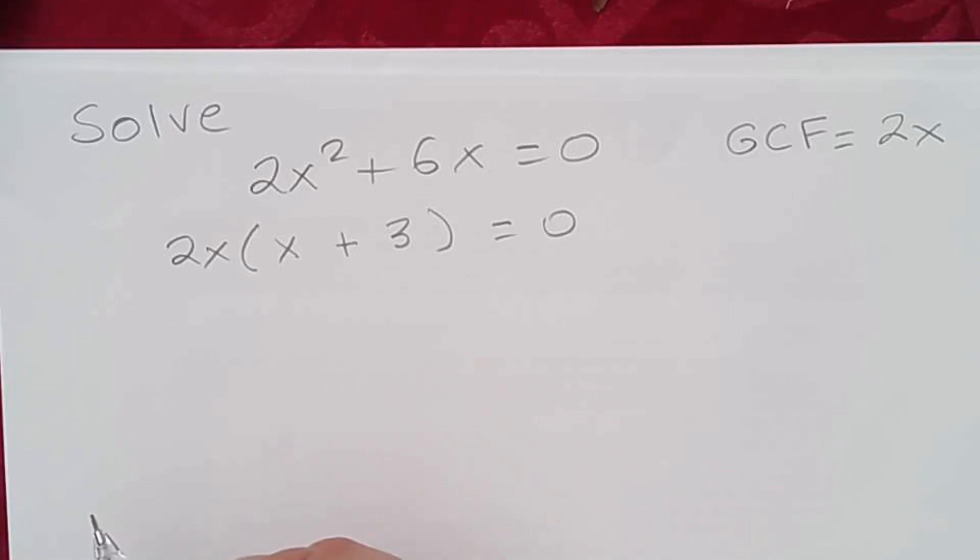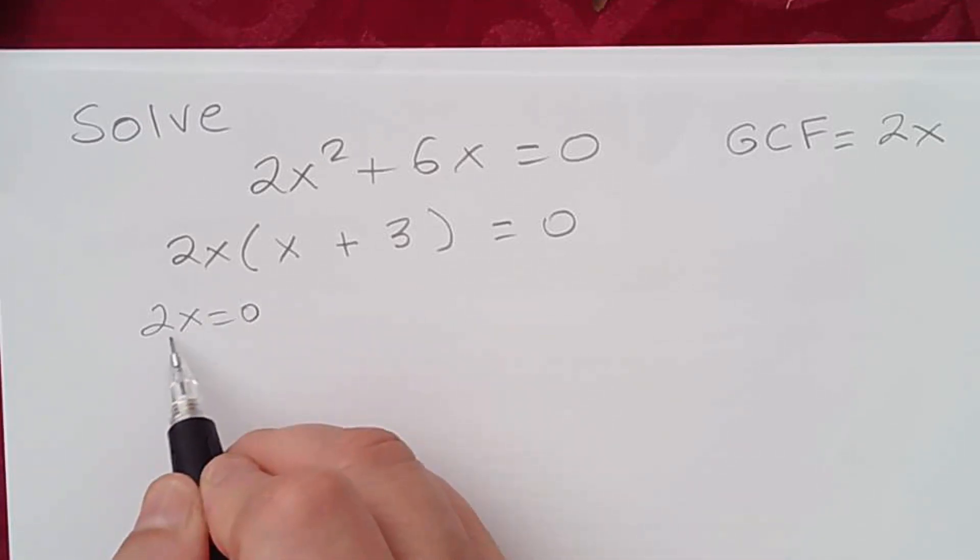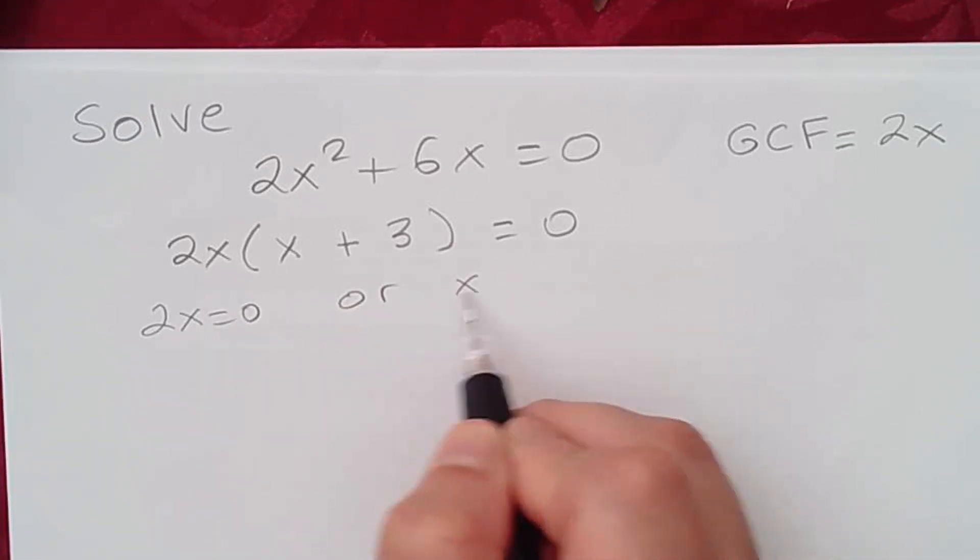Now applying the zero product property, we set each factor containing a variable equal to 0. So 2x = 0 or x + 3 = 0.